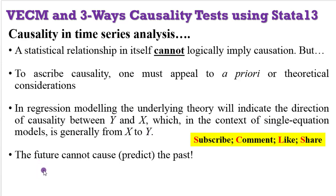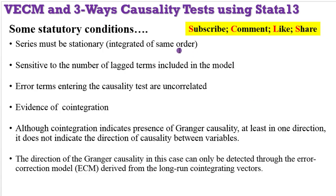Also know that the future cannot predict or cause the past. Talking about the vector error correction model, some statutory conditions must be in place. Number one, the series you are using must be stationary, integrated of order one. You cannot arbitrarily apportion lags in the model — you must choose the optimal lags from the information criterion. Also, the error terms must be serially uncorrelated. There must also be evidence of cointegration. Although cointegration indicates the presence of Granger causality in at least one direction, it does not indicate the direction of causality between the variables. The direction of Granger causality can be detected through the error correction model derived from the long-run cointegrating vectors.